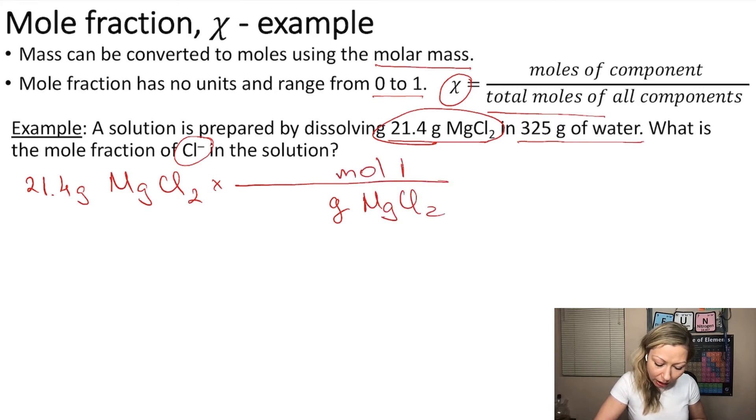We know that in one mole of MgCl2, we have 95.21 grams, and this is simply the molar mass of magnesium chloride.